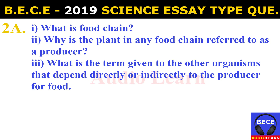Question 2a(ii): Why is the plant in any food chain referred to as a producer? The reason for naming plants as producers is because a plant makes its own food. Question 2a(iii): What is the term given to the other organisms that depend directly or indirectly on the producer for food? The term for other organisms in the food chain is consumers.